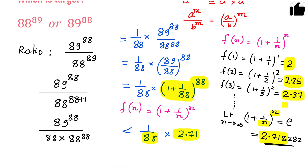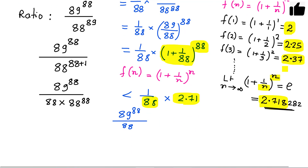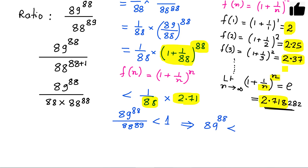So this whole thing is less than 1 — my ratio is less than 1. And what was the ratio? It was 89 raised to the power 88 divided by 88 raised to the power 89. This ratio is less than 1, which means the denominator is bigger. So I can say 89 raised to the power 88 is less than 88 raised to the power 89 — so 88 raised to the power 89 is the larger number.